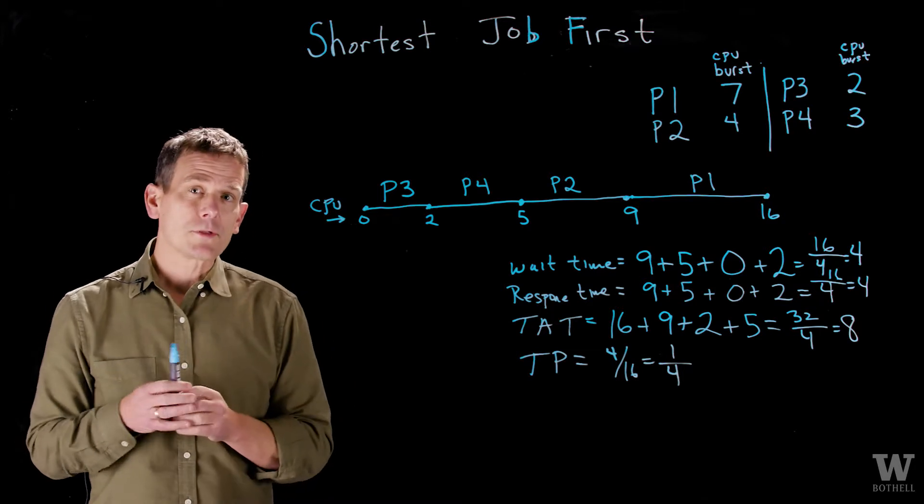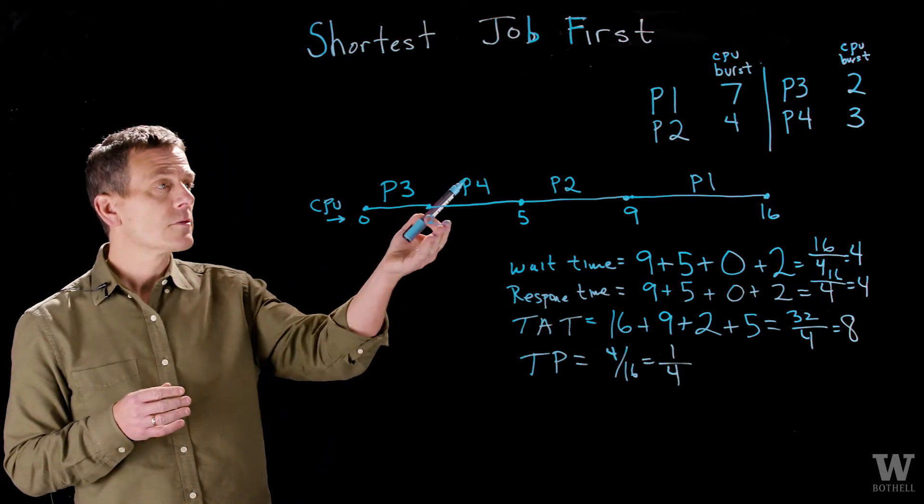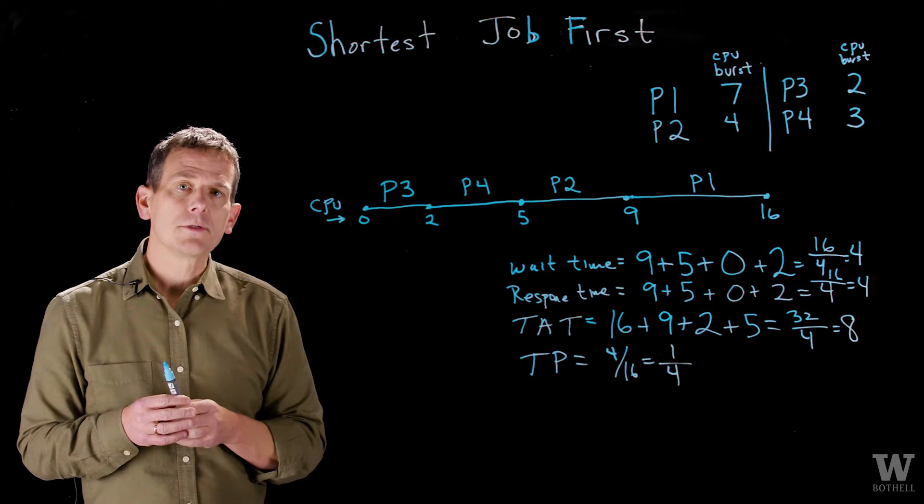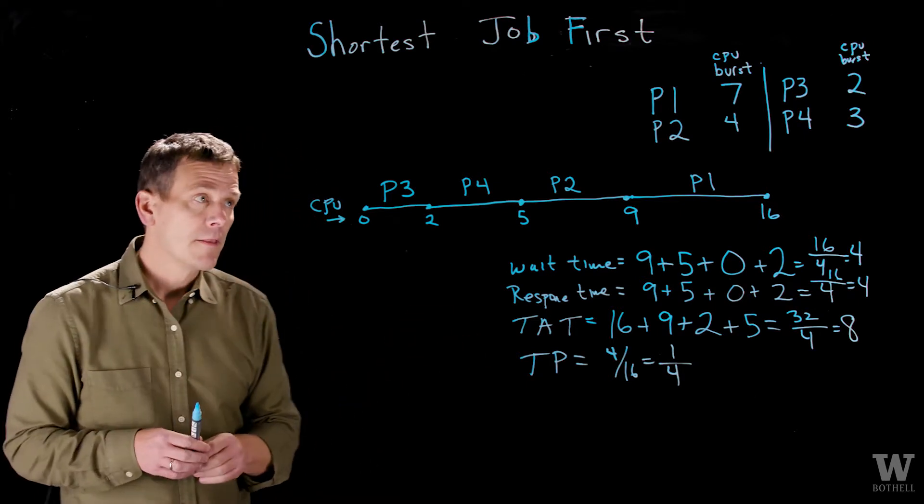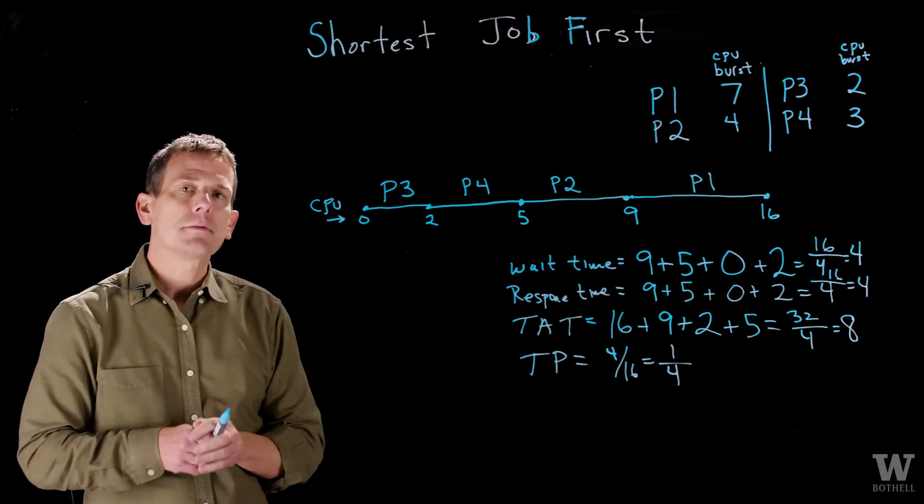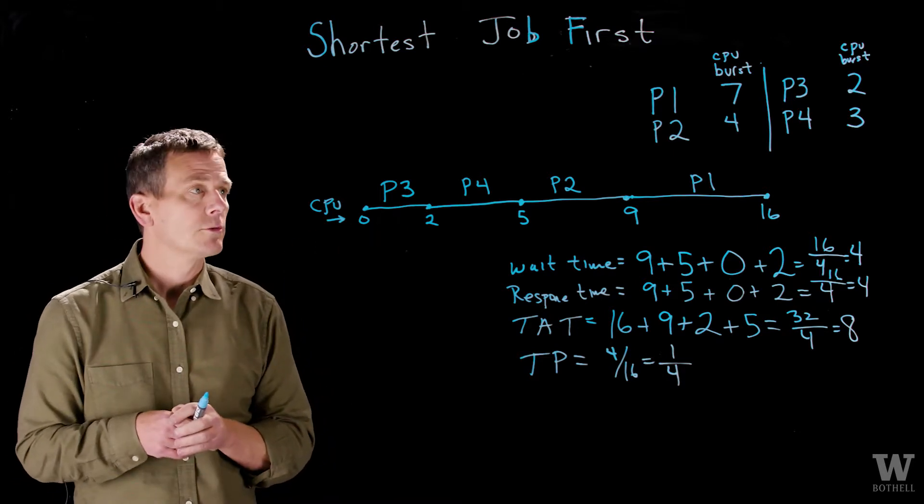Now, we have a problem with the shortest job first. The scheduler has no idea how much CPU a job is going to take. It can't look into the future. It doesn't know what the user is going to do. Therefore, it needs to somehow approximate how long a job will take.